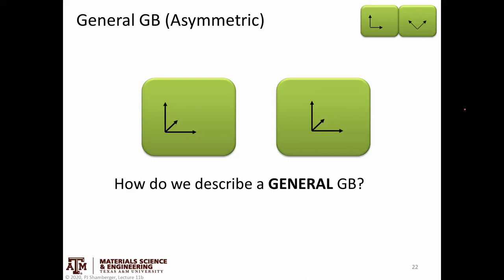We're going to keep talking about terms related to grain boundaries. These are things that could happen at homophase interfaces, where I have the same phase on either side of the interface. So that could mean a crystal of iron and another crystal of iron, or a crystal of silicon and another crystal of silicon. The terms we're going to use are for things where there's some sort of change in the lattice orientation across that interface.